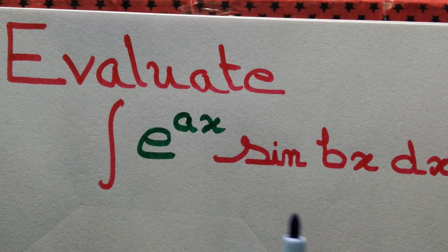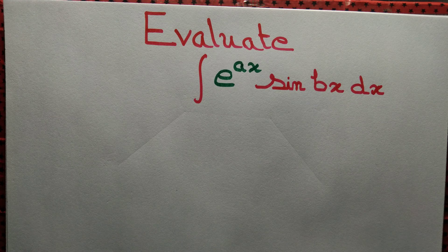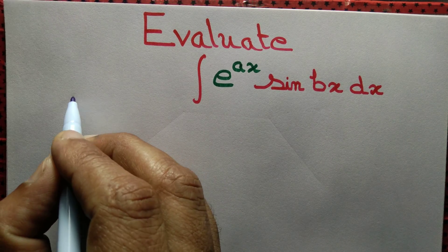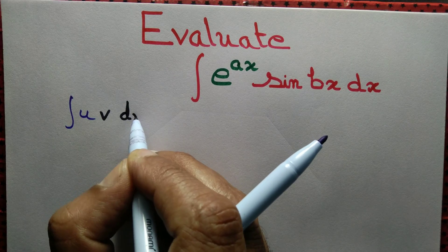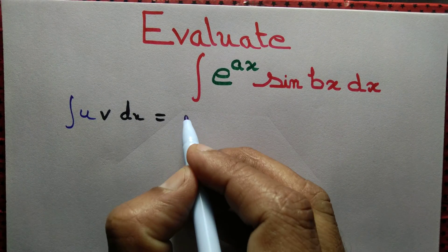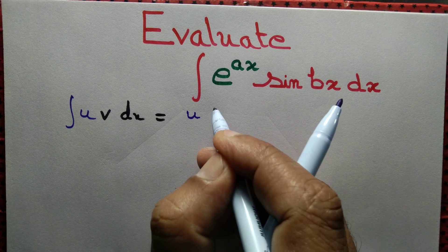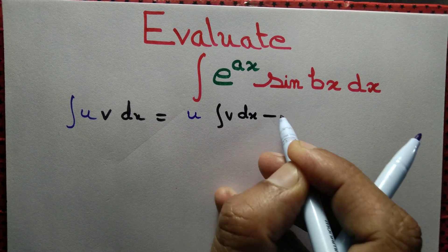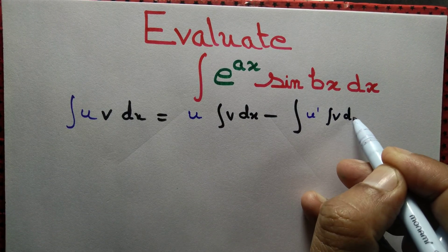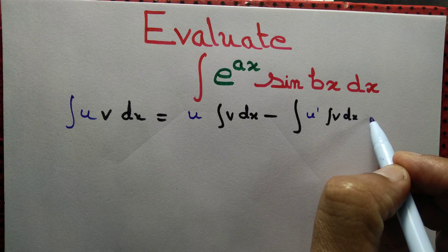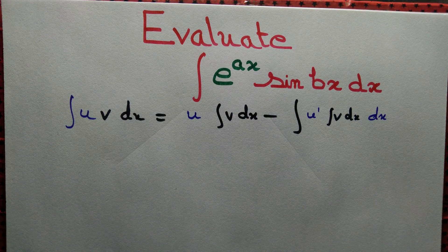Let us evaluate the integral e to the power ax into sin bx dx by applying integration by parts. First, we recall the product rule: the integral of u into v dx equals the first function u, into the integral of v dx, minus the integration of the derivative of the first function times the integral of the second function. That's exactly what we have in the product rule. Let's apply it to evaluate this integral.